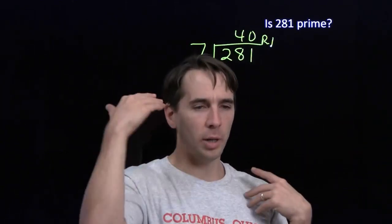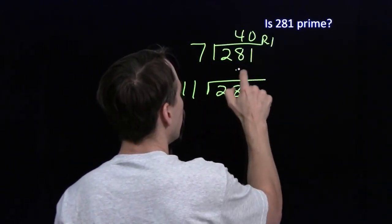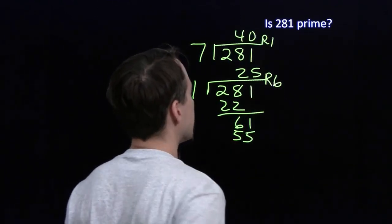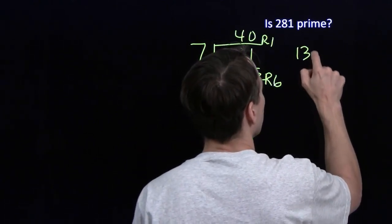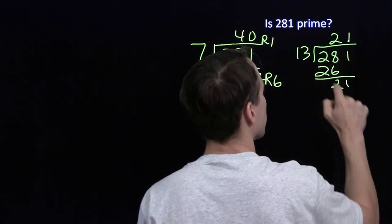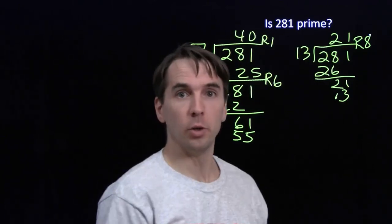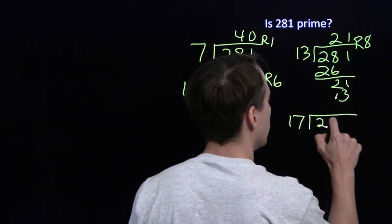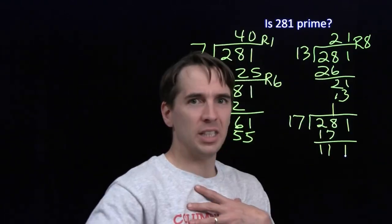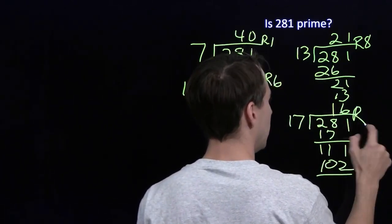Let's keep going. Next prime after 7 is 11. Long division: 11 into 281 — 11 into 28 goes twice, that leaves 6, 11 into 61 goes five times, remainder 6. Next prime: 13. 13 into 281 goes twice, 13 into 21 goes once, remainder 8. Next prime is 17. 17 into 281 goes once, leaving 111. 17 times 6 is 102, so we get a remainder of 9. 17 doesn't work.